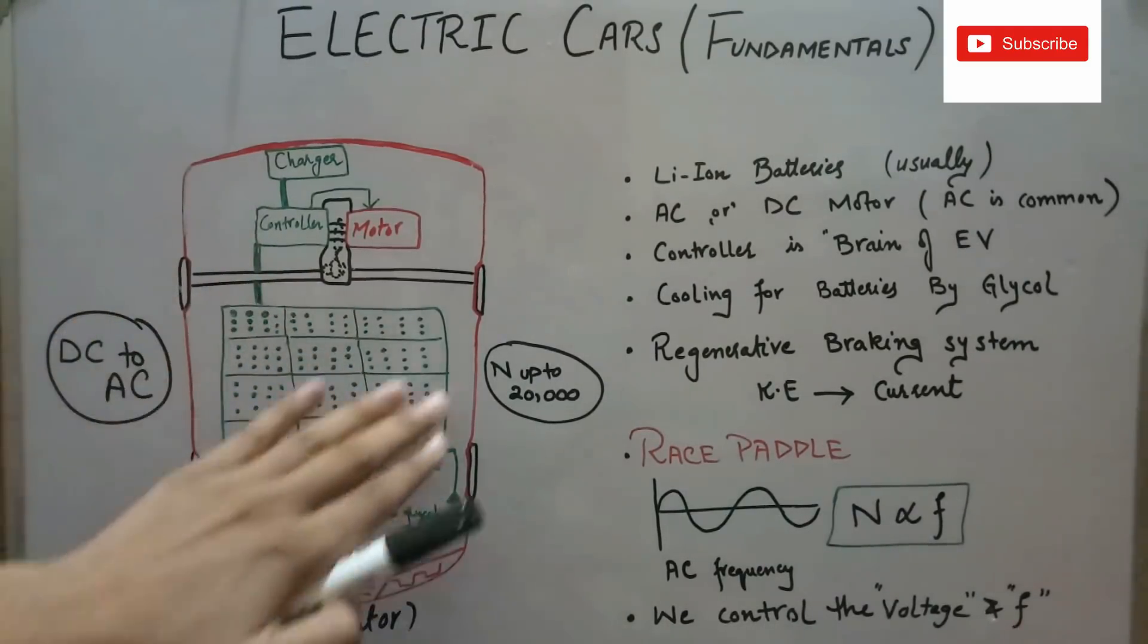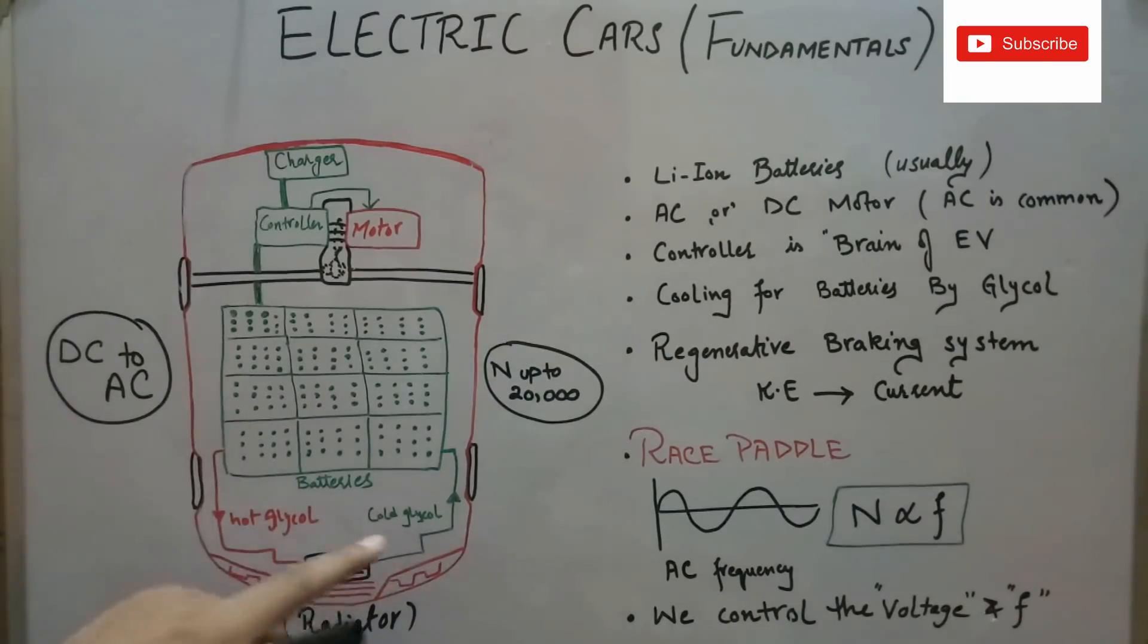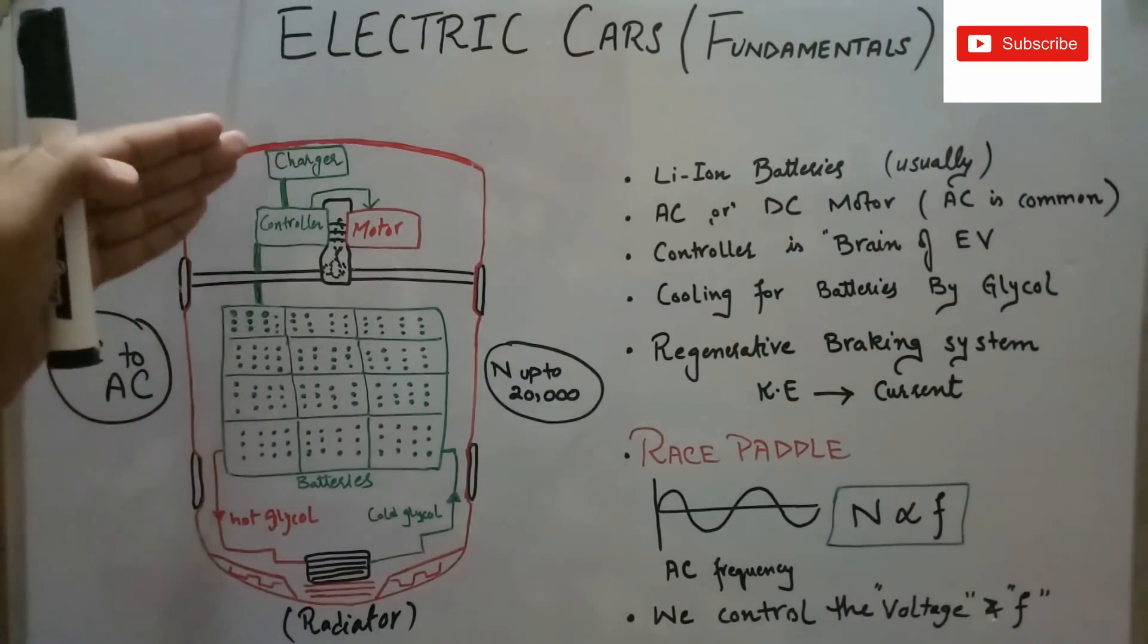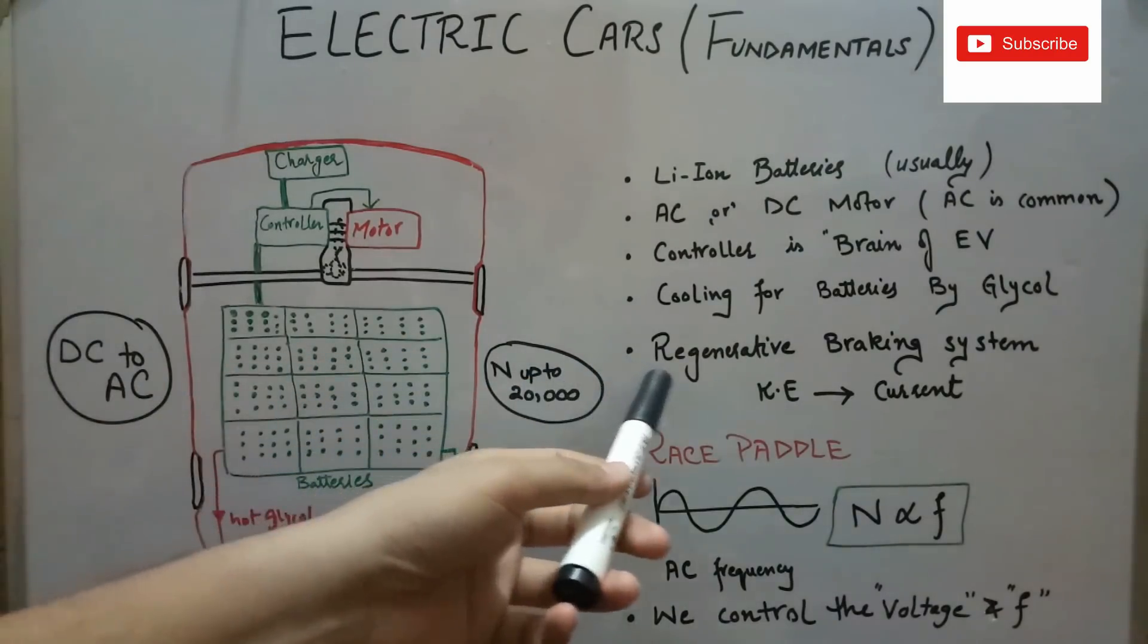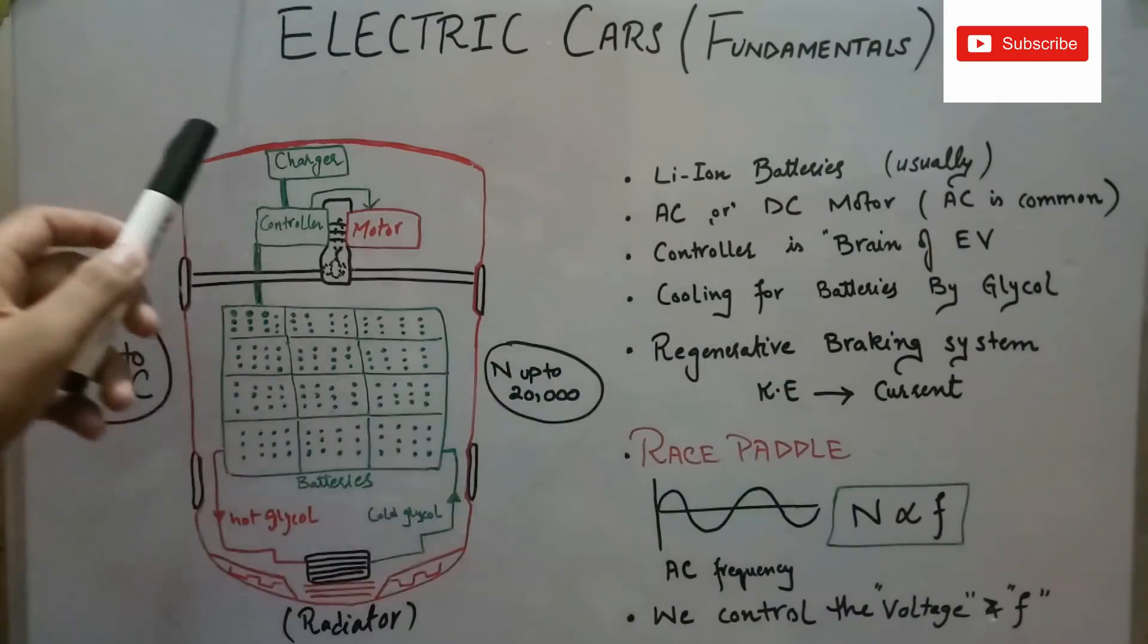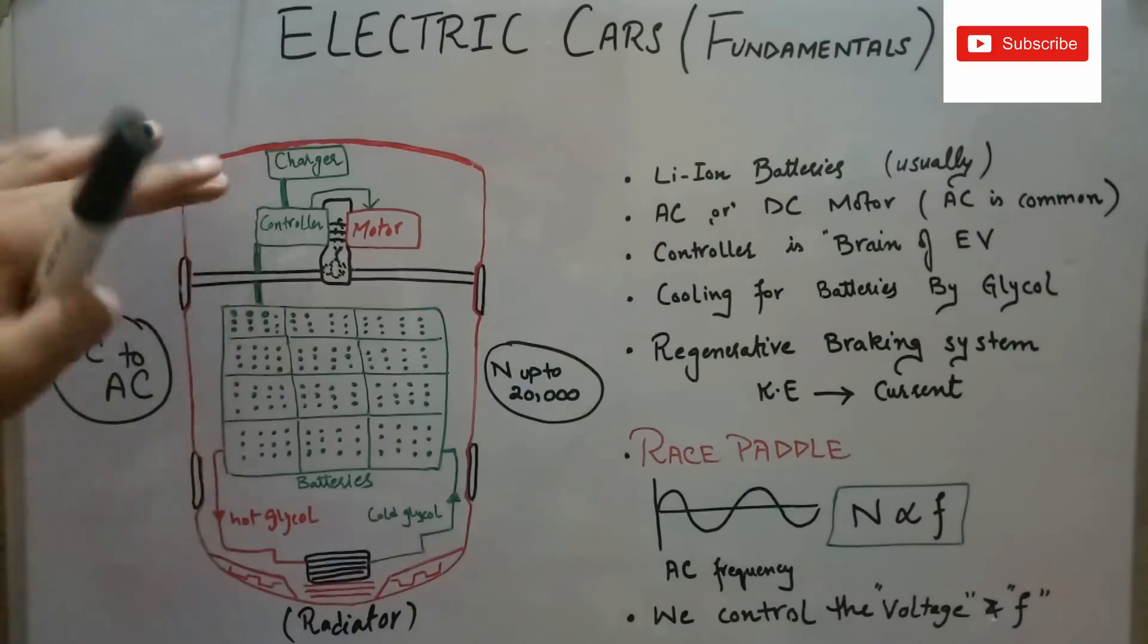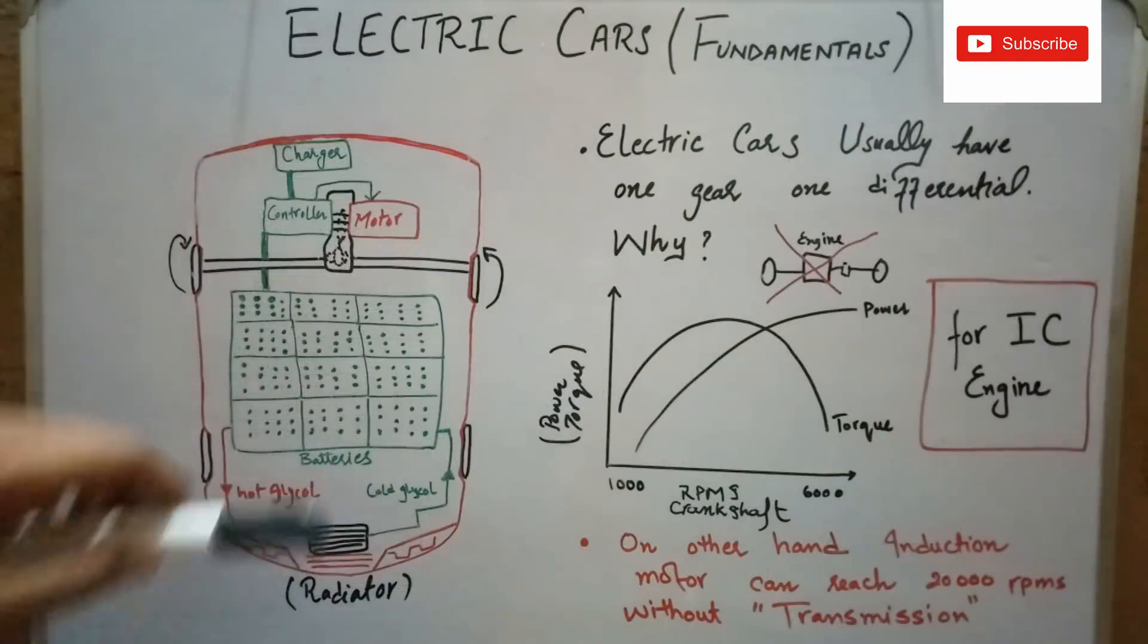Now for the cooling purposes of the batteries, we use glycol as a working fluid, and here we have also a radiator in the electric cars. Now there is also a mini charger in electric vehicles which is based on a regenerative braking system, which converts the kinetic energy of the driving wheels back into AC current, and then the controller will convert the AC current into DC current and charges the batteries a little.